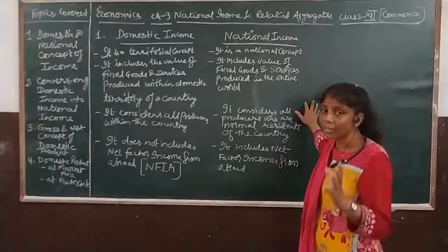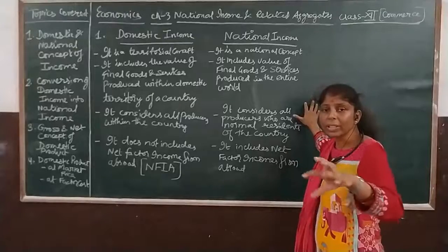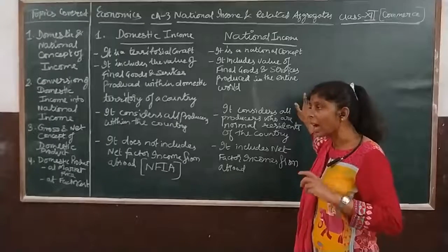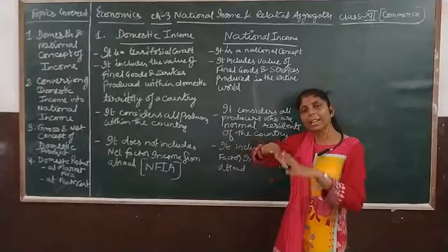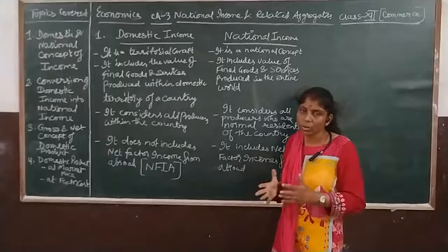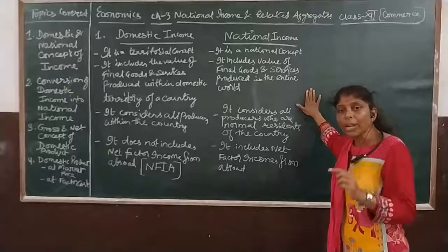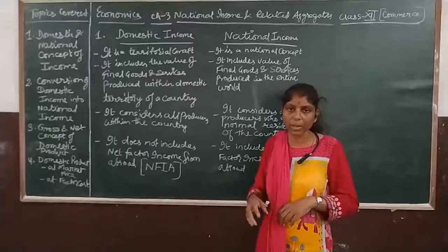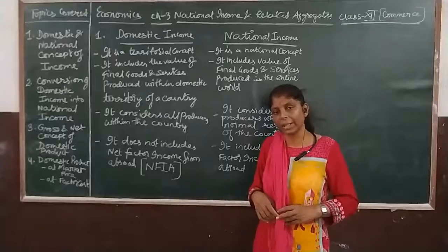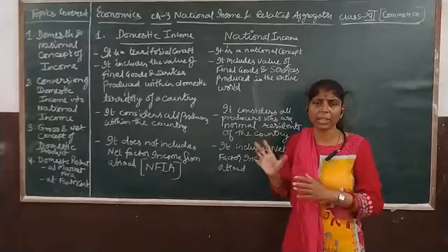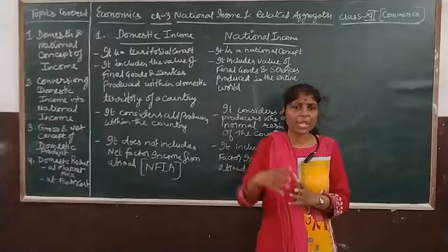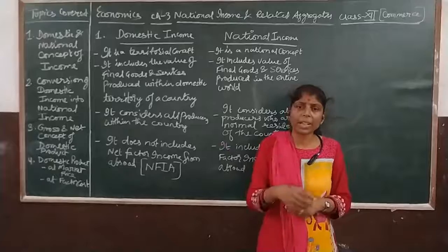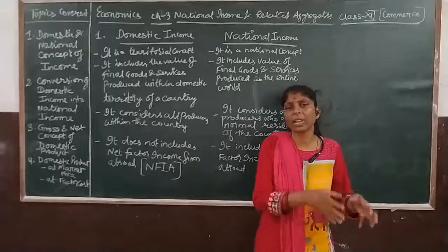Now we come to the national income — the national concept. Here it is not about territory, it is about nationality. Nationality means not about Indian territory but it is concerned with Indian residents, that means normal residents. The national income is the income of normal residents of India produced anywhere in the world. If a normal resident of India is doing business in America, Greece, or France, all such production of final goods and services of India will be found in the national income, because it is a normal residence of India which they have produced.